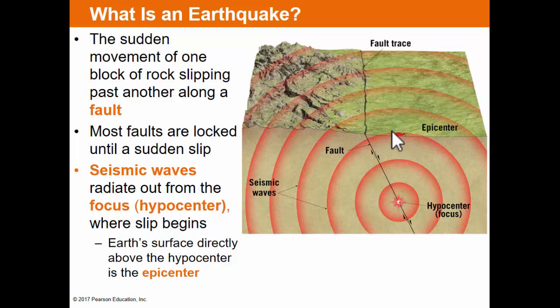When that slip occurs, seismic waves will radiate away from what is known as the hypocenter, or more often referred to as the focus. The focus happens somewhere along the fault line — it may happen very close to the surface, or it may happen very deep beneath the surface. The bottom line is that is the focus of the earthquake. The epicenter, which we hear so much about in the media, is directly above the focus on the surface of the Earth.